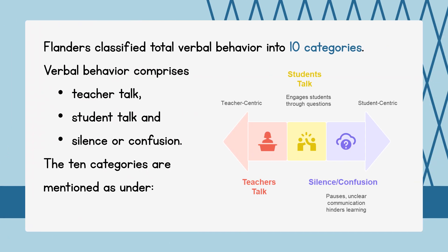Flanders developed this system to observe and analyze what is actually being said or not said in the classroom. FIACS is all about verbal behavior — the interaction. It divides every bit of classroom communication into 10 categories, and these 10 categories are divided into 3 major parts.